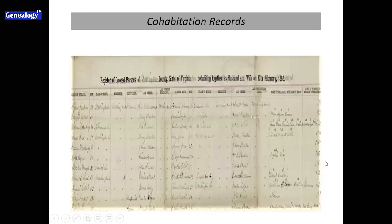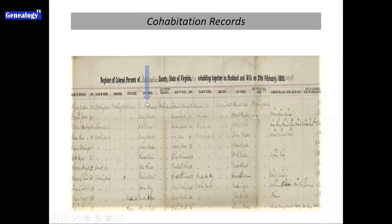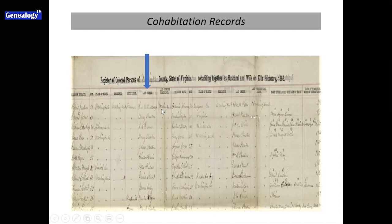In Virginia, the cohabitation records are much more information-filled. They have the name, age, and place of birth of the bride and groom, as well as their current residence, their occupation, and — this is a wonderful bit of information — the last owner. It also has the last owner's residence. That last-owner piece is just like manna from heaven. The other thing that happens in Virginia is they name the children. The children these couples gave birth to are named on the cohabitation record, and the date cohabitation began is also listed. If you are doing slave ancestral research in Virginia, look for these cohabitation records.